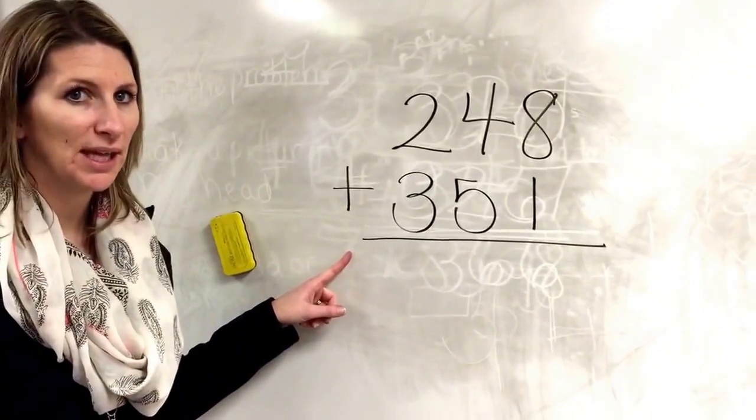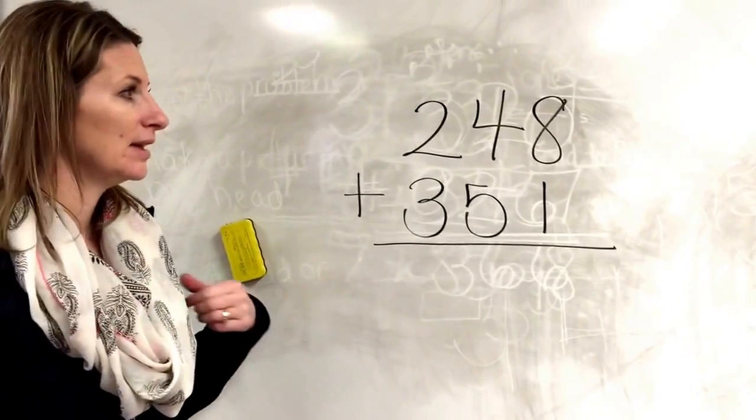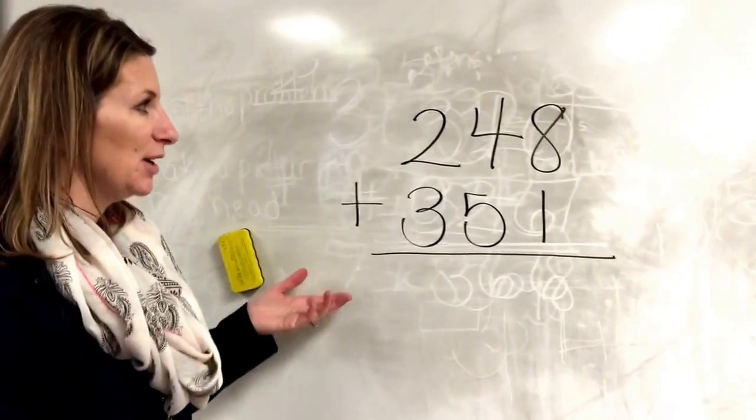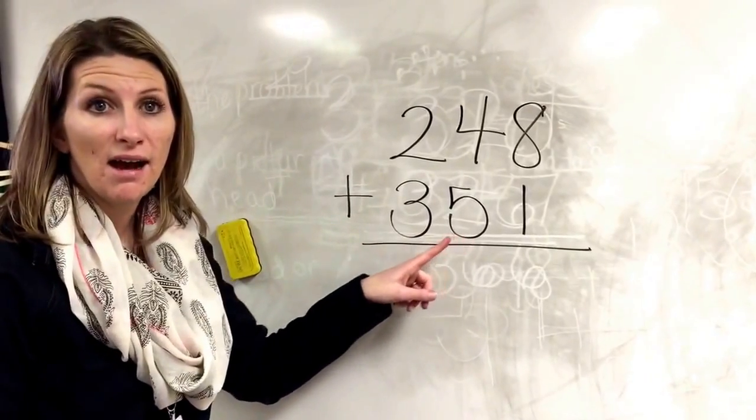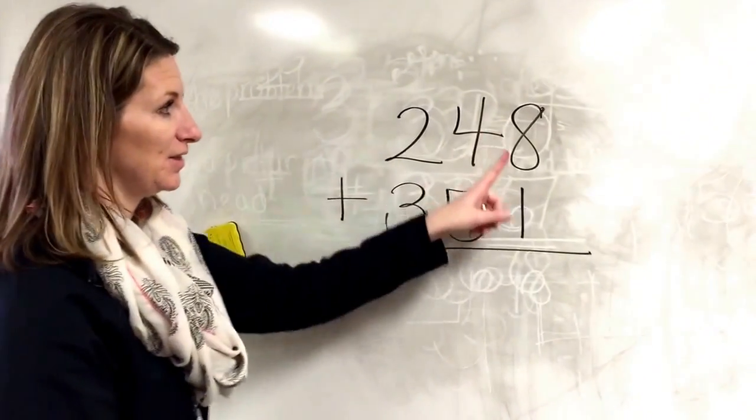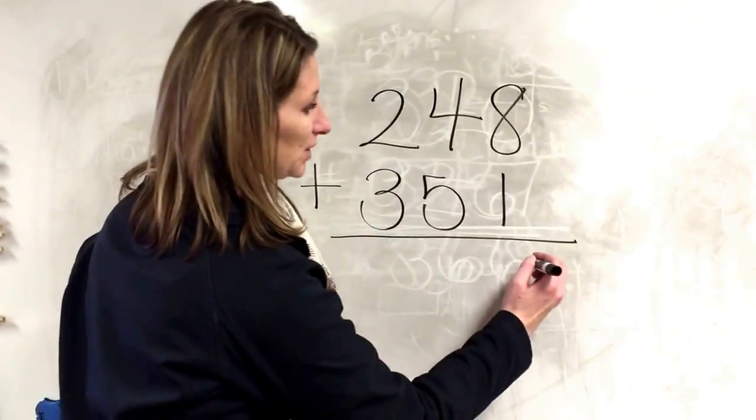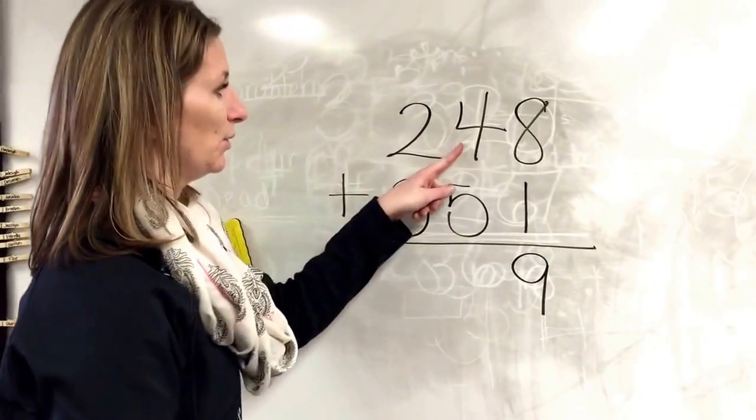to work this out on your whiteboard and push play when you are done. Okay, so now you should have 248 plus 351 on your whiteboard worked out. Add the ones first: eight plus one is nine, four plus five